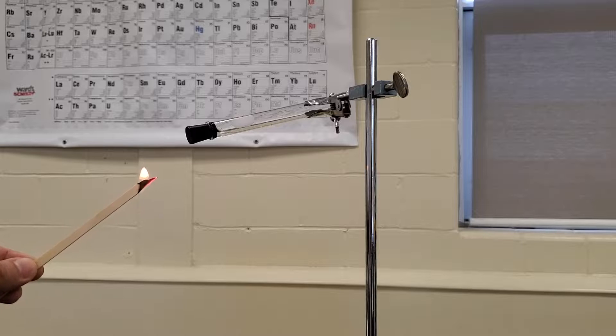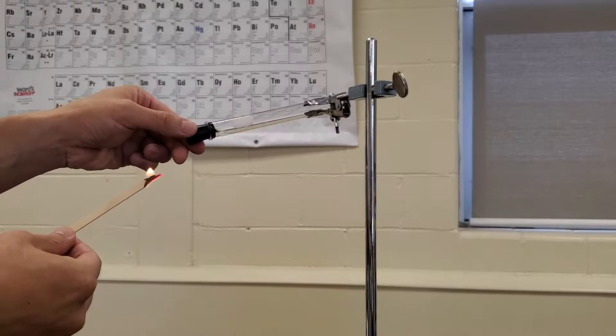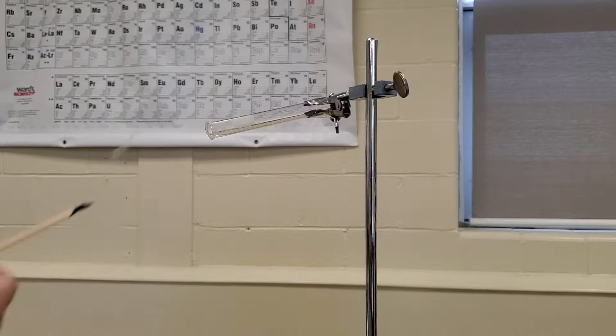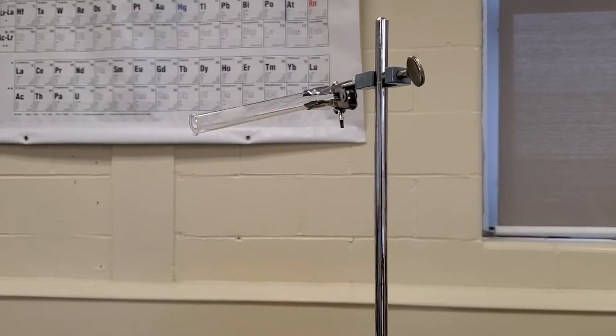Let's combust the hydrogen gas by doing a flaming splint test. We're going to bring a flaming splint towards the mouth of the test tube and react it with hydrogen gas. That squeaky pop is a property of hydrogen gas.